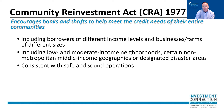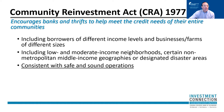It means that they have to include providing access to borrowers of all different levels of income, both businesses and small farms of different sizes. They have to include low and moderate income neighborhoods, distressed or underserved communities, both in urban areas and in rural areas, and also disaster areas. The CRA is not asking them to do any undue risks or take on any unwise banking practices — they need to do it in a consistent, safe and sound operation.